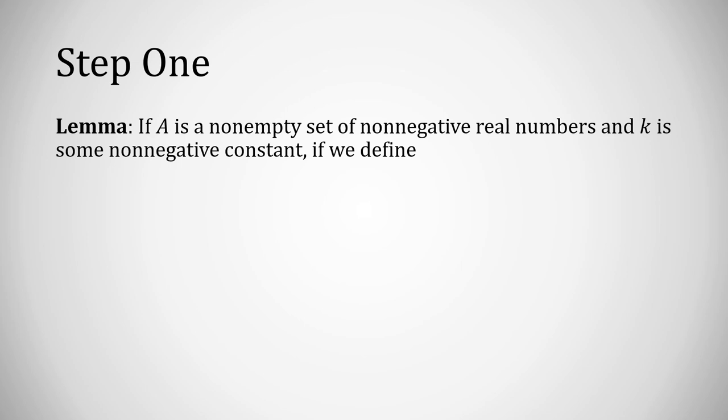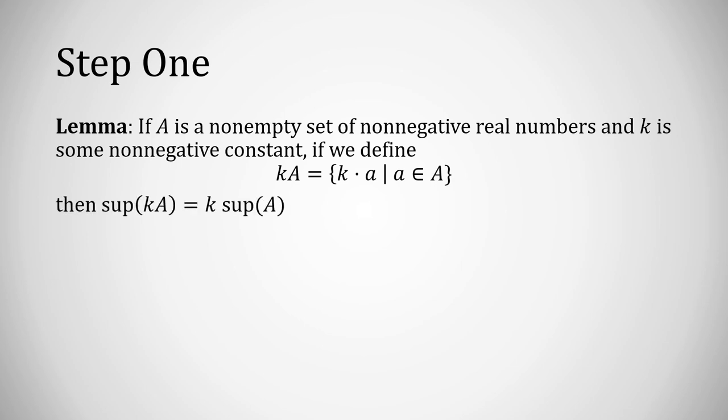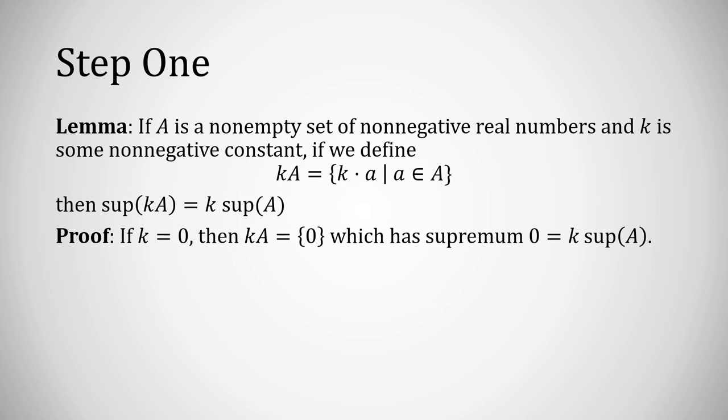Step one in the proof: if A is a non-empty set of non-negative real numbers and k is a non-negative constant, and you define the set kA to be all possible products k times elements of A, then the supremum of kA equals k times the supremum of A. If k equals zero, all products k times a will be zero, so kA is simply the set containing zero. This singleton has supremum zero, which equals k times sup(A), because k is zero.